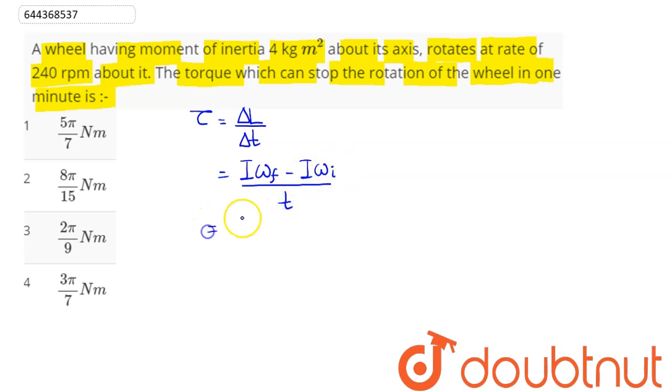time. Here is one minute. So I comes out to be common, this here is omega f minus omega i divided by time t. Substituting the value, moment of inertia is given here as 4